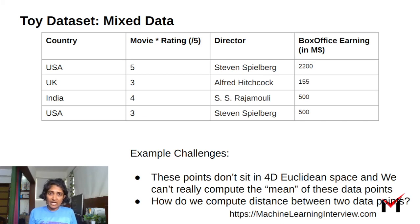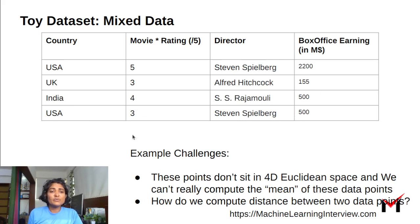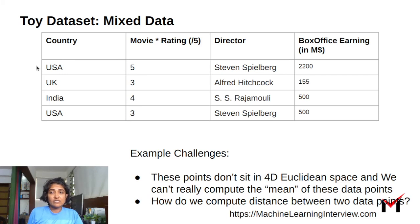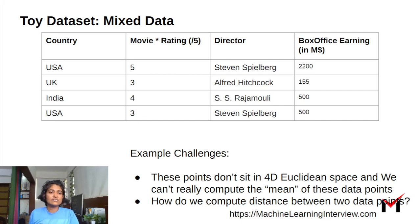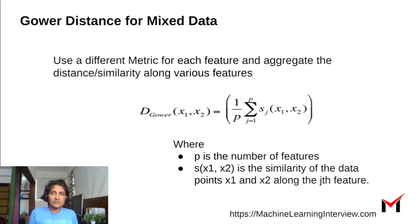Some of the challenges with this data are that you cannot typically apply all your machine learning algorithms directly, because these points don't sit in the 4D Euclidean space. You cannot apply K-means, for instance, because you can't find the mean of these points since they're categorical. And even before that, how do we compute the distance between two points? If I want to find whether the first row (USA) is closer to the second movie or the fourth movie, how do you definitively say that? So to answer these questions and work with mixed data in ML models, one of the first things we need is a notion of distance, and Gower distance addresses this exact problem.